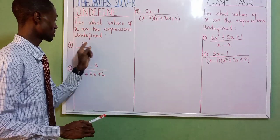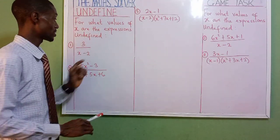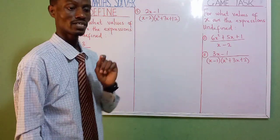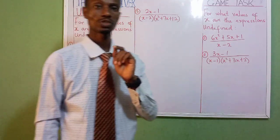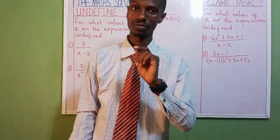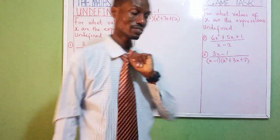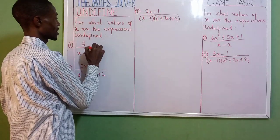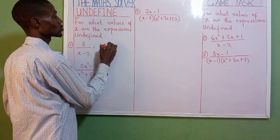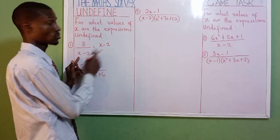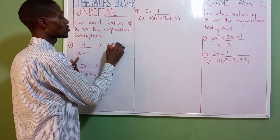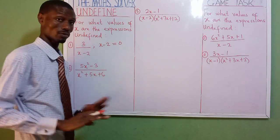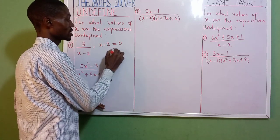We have our numerator here which is three, and our denominator is x minus two. When solving for undefined, what we are most particular about is the denominator. This is our denominator: x minus two. We equate our denominator to zero — that's all.